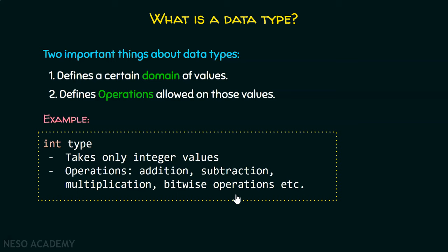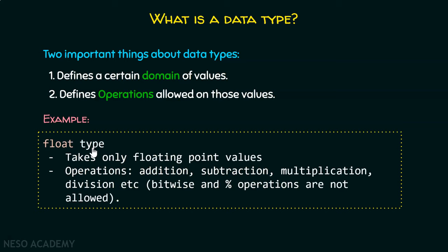For the sake of understanding, let's take another type — float type. It takes only floating point values. The operations we can perform on float types are addition, subtraction, multiplication, and division. But we cannot perform bitwise and mod operations on them. This should be well noted.